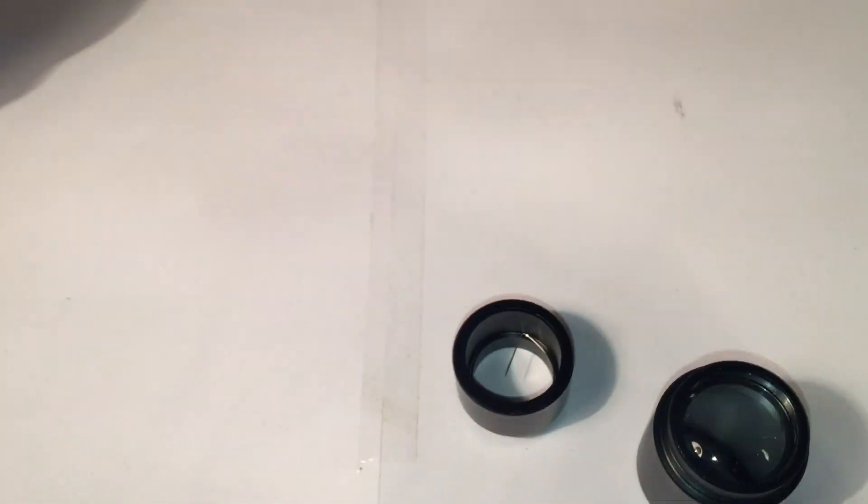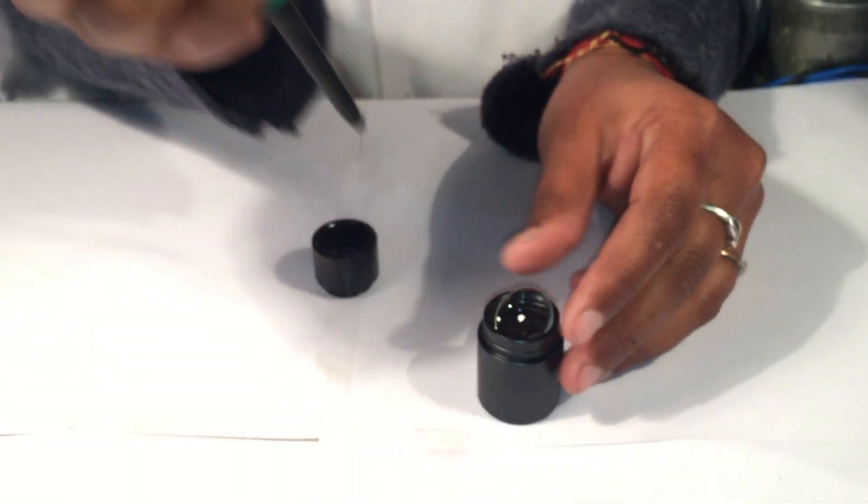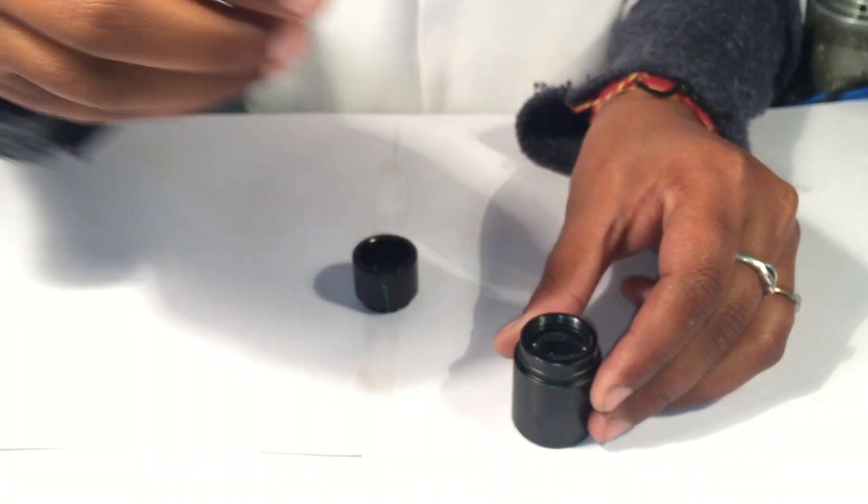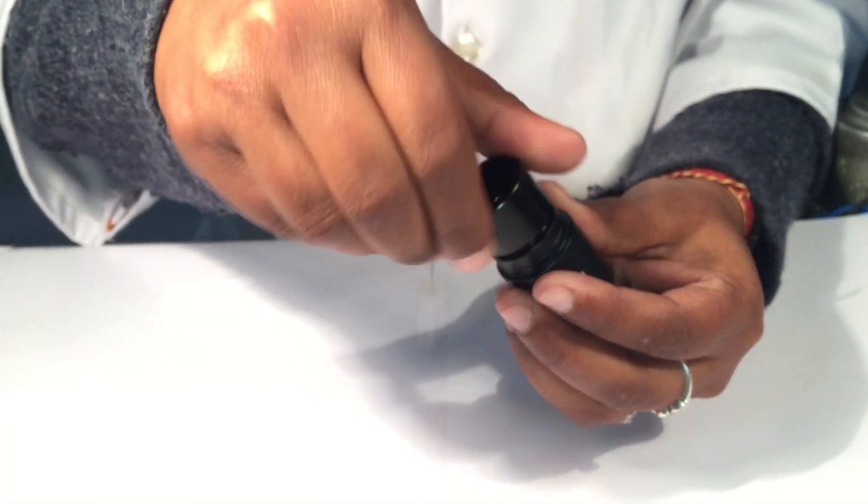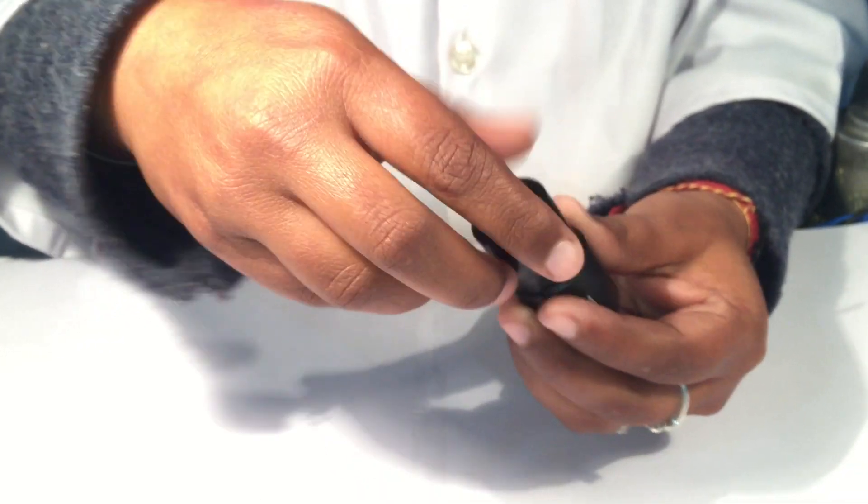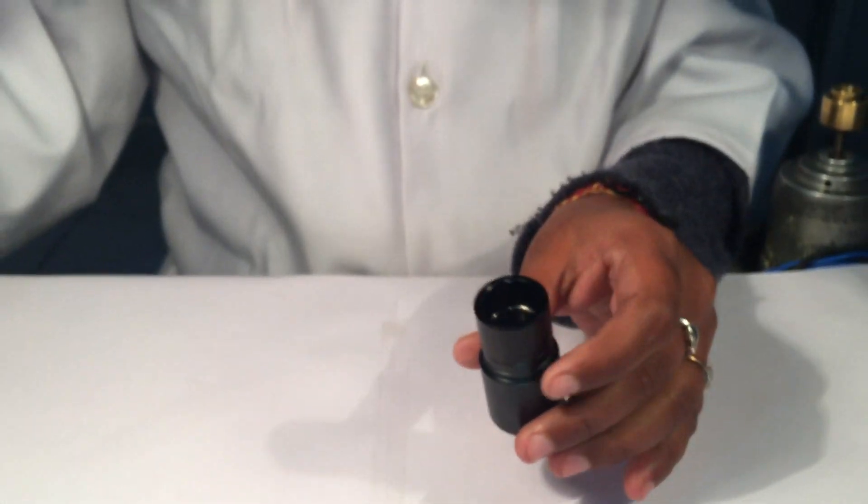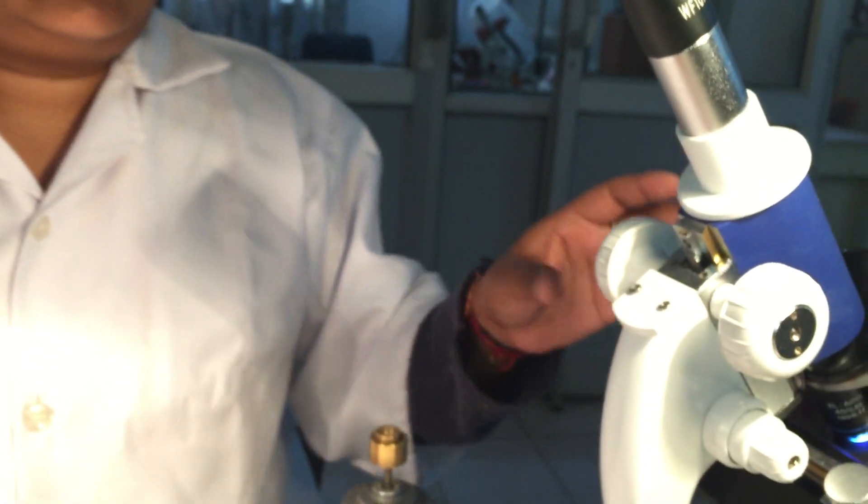So when it is done, you can air blow it. Now we will screw the lower part to the eyepiece and we will check on the microscope that the pointer is working perfectly.